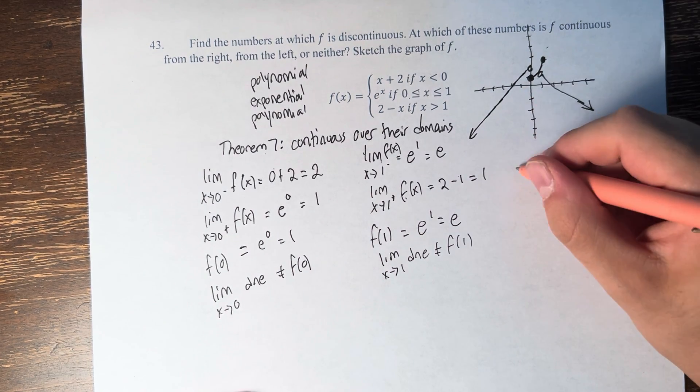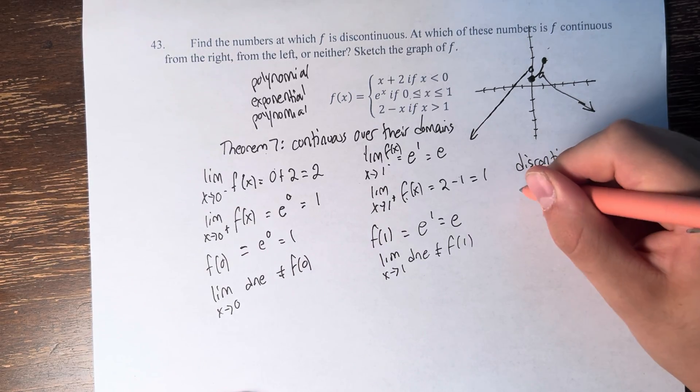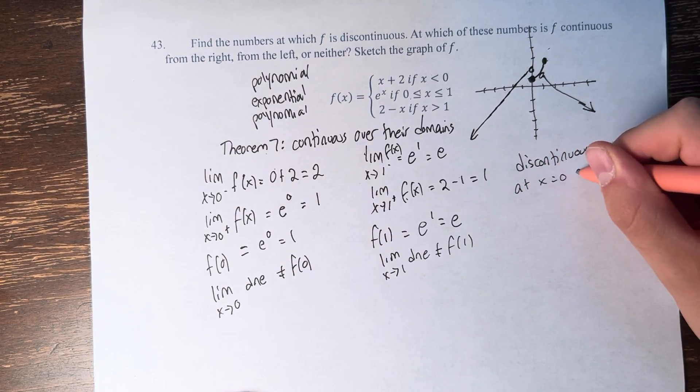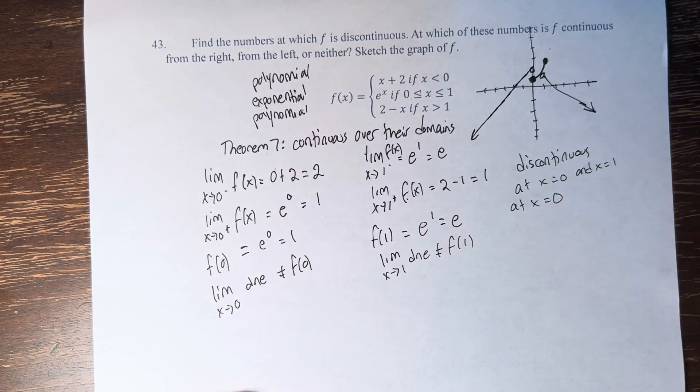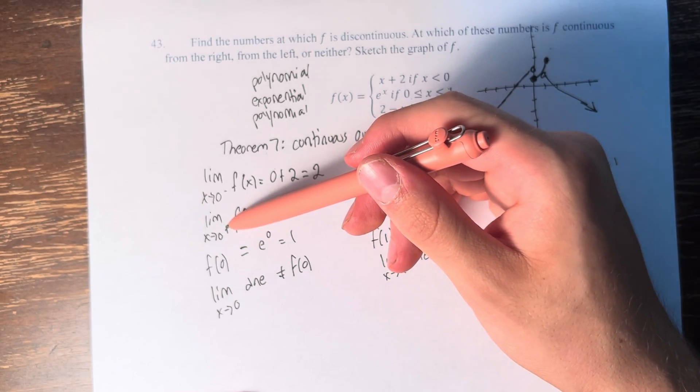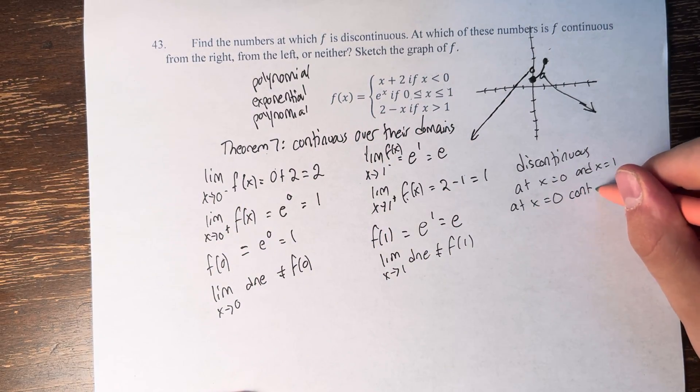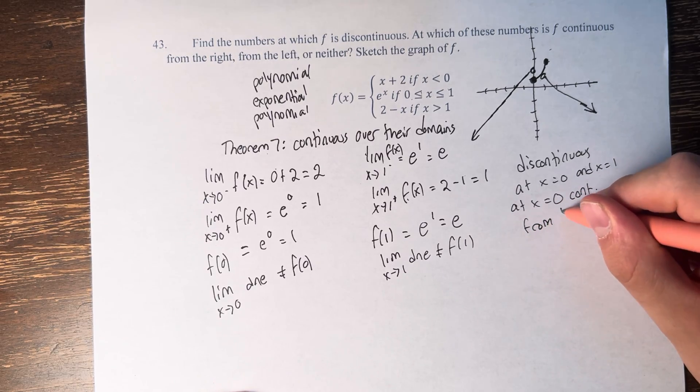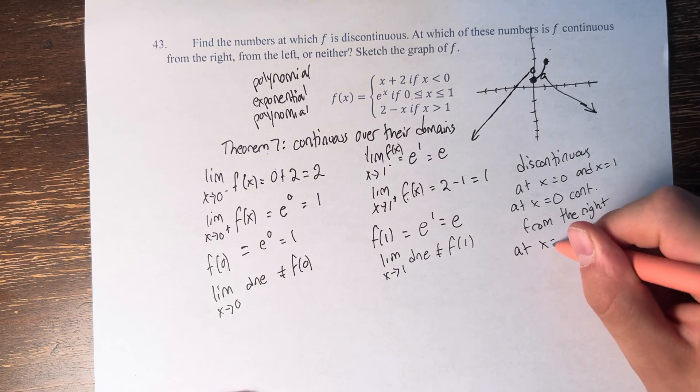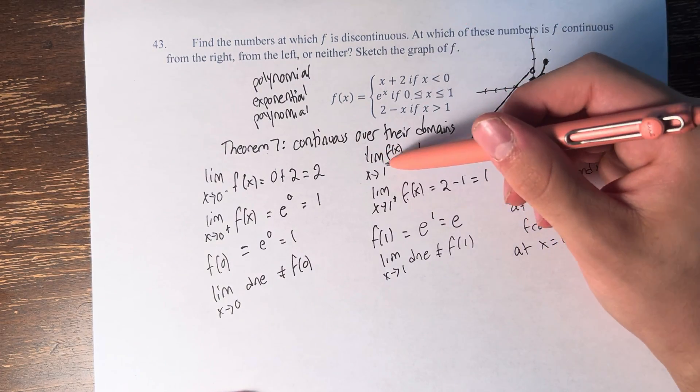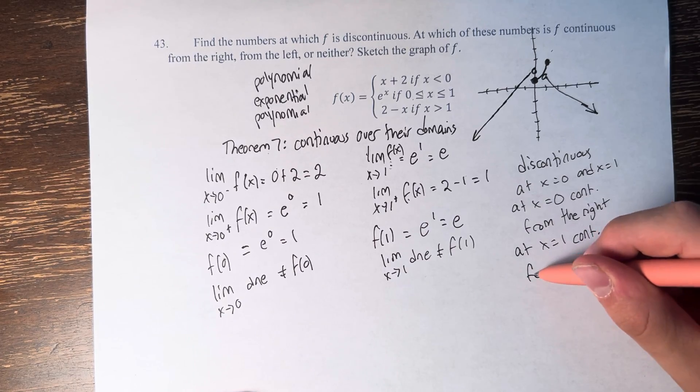So the function is discontinuous at x is equal to 0 and x is equal to 1. At x is equal to 0, we can see that the limit as x approaches 0 from the right is equal to f of 0, so it's continuous from the right. And at x is equal to 1, the limit as x approaches 1 from the left is equal to f of 1, so it's continuous from the left.